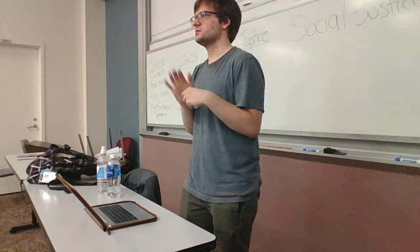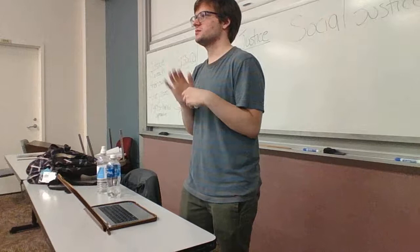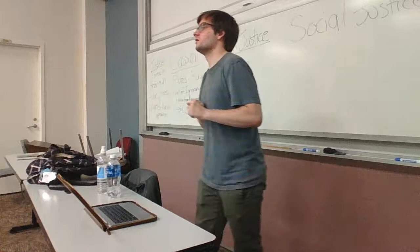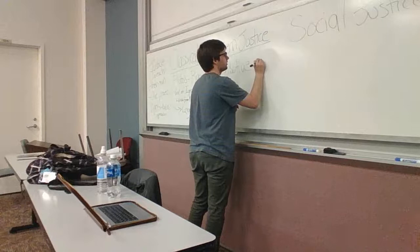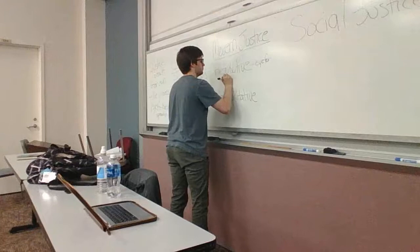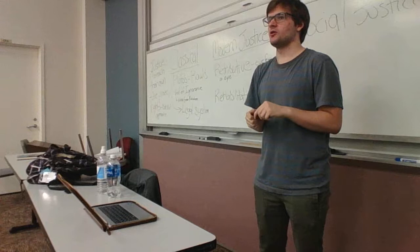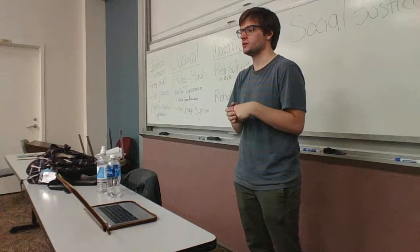What is retributive justice? Retributive justice is eye for an eye. The idea is that for something to be just, the legal system applies justice in a utilitarian or equal way by meting out the same punishment as the crime committed.